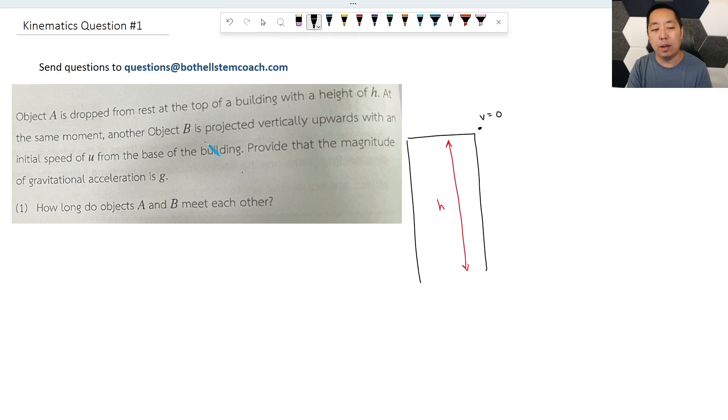At the same moment, another object B is projected vertically upwards from the base of the building. This is object A, this is object B. It has an initial upward speed of U from the base of the building. Provide that the magnitude of gravitational acceleration is G, how long do objects A and B meet each other? So this guy is going to fall downward, and this guy, I'm going to use a different color, basically this guy is going to go up and this guy is going to come down and we would like to know when do they meet, right?